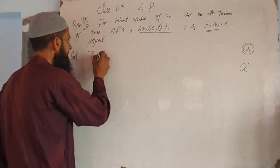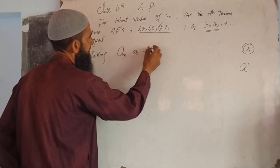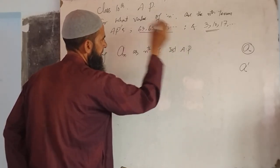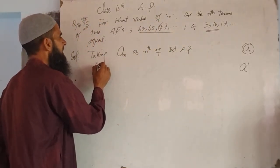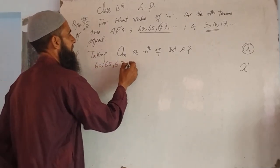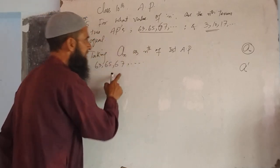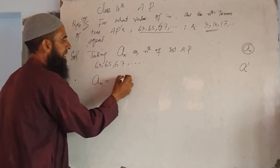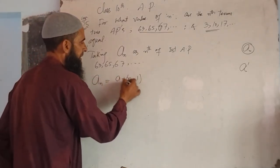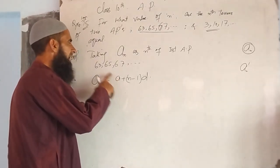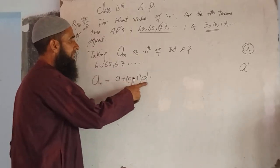Taking An as nth term of first arithmetic progression: 63, 65, 67. So this is our arithmetic progression. Iska hum nth term le rahe hain. An is equal to A plus n minus 1 into D. Yeh hamare paas nth term hota hai. A is first term.